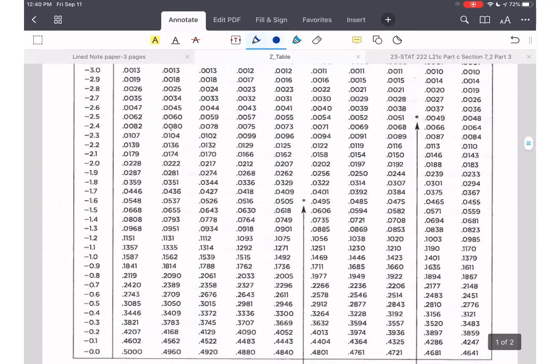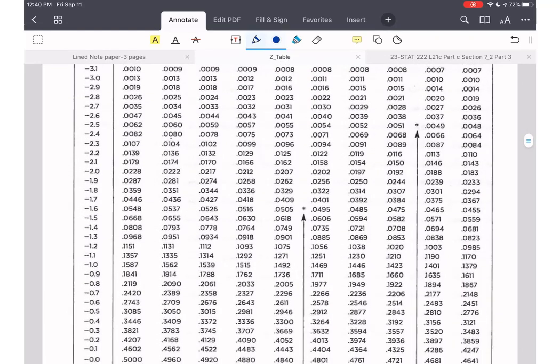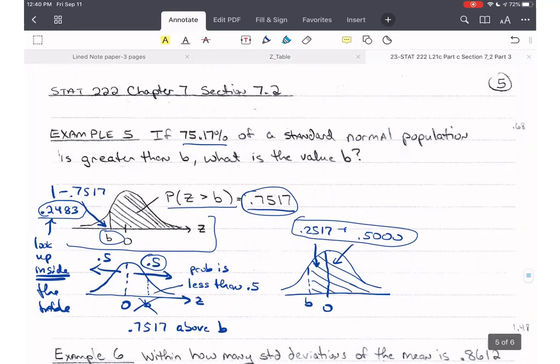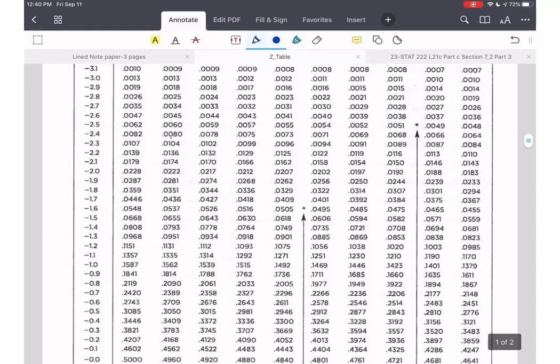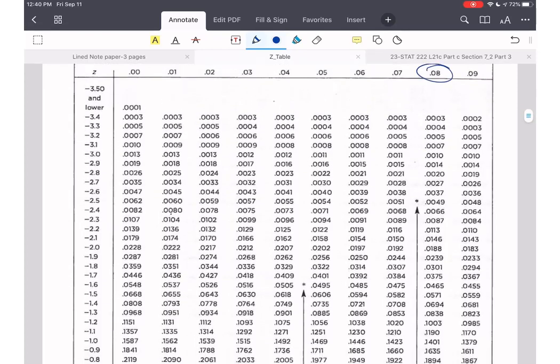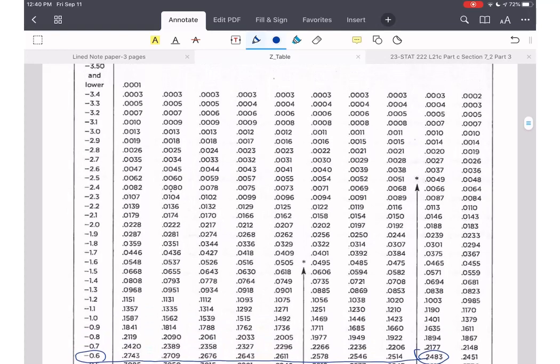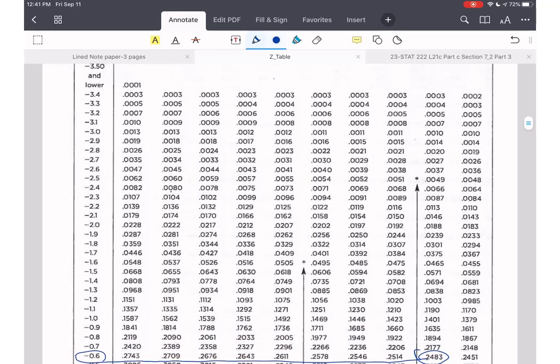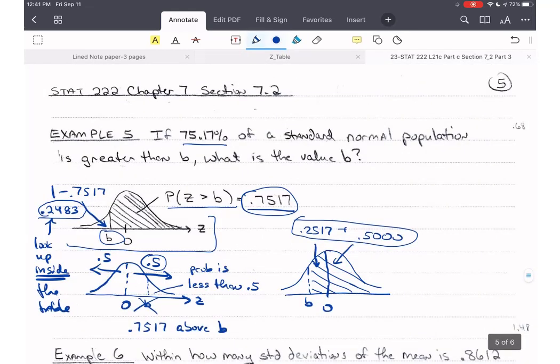So I need to look up 0.2483 in the Z-table. And so it's going to be on the negative side, as I've already told myself. Now I've forgotten the number. So let me look, 0.2483, 0.2483, two, four, four, four, four, so I got 483 right here. And that's under eight, so the second decimal place is going to be that. So this is negative 0.68. So B is negative 0.68. So B equals negative 0.68. And that is our answer.